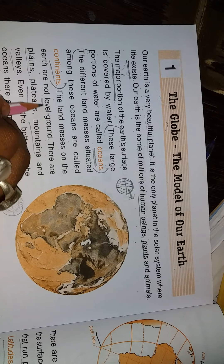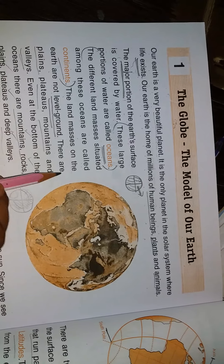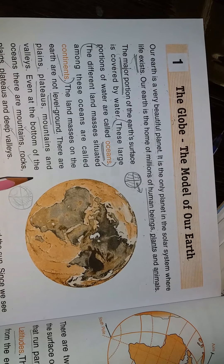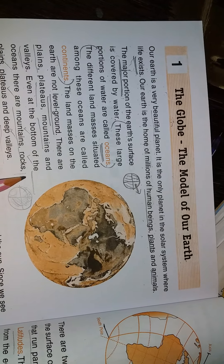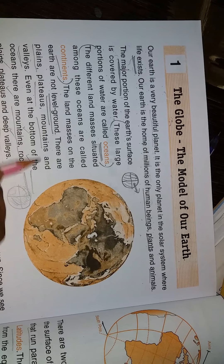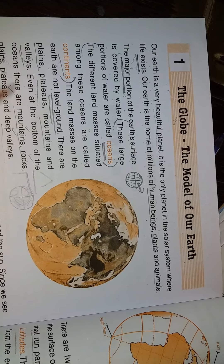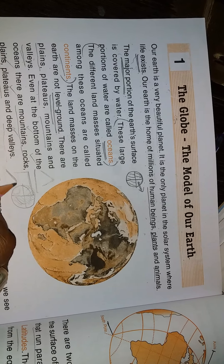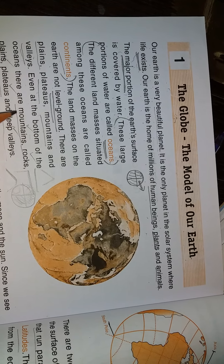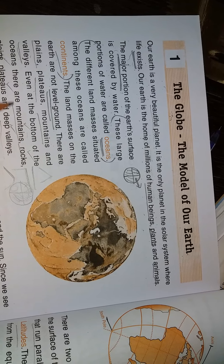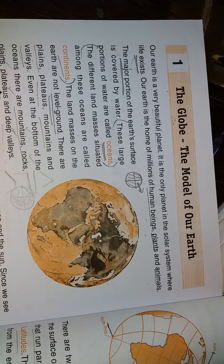The land masses on the Earth are not level or flat. There are plains, which are flat areas, plateaus, which are stable elevated land, mountains, valleys, and even at the bottom of the ocean there are mountains, rocks, plains, plateaus, and deep valleys.